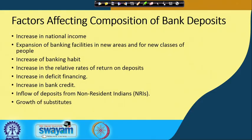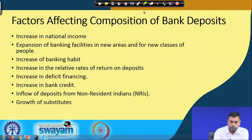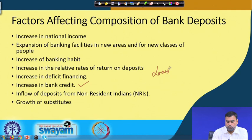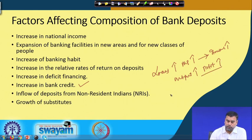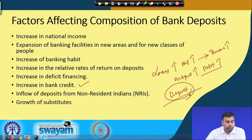An increase in bank credit is another reason. Whenever bank credit increases — that is, loans — it will increase the money supply. If money supply increases, investment will increase; if investment increases, output will increase; if output increases, the profit of the producer may increase, and that money will again come back to the bank as a deposit. So there is a relationship between bank credit or bank loans and the deposit base.